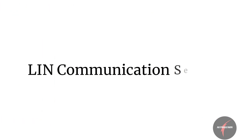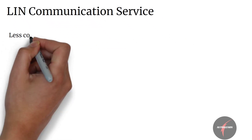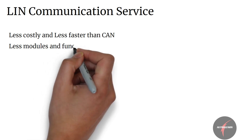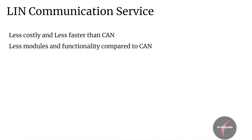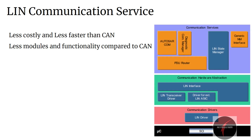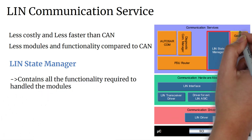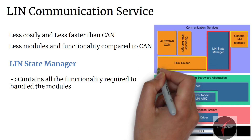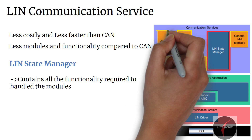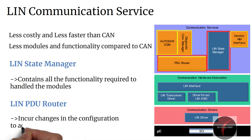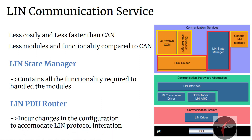Now let's look into the LIN communication service. In comparison to CAN, LIN communication is less costly and less fast, hence the number of modules and functionalities offered by LIN communication service is also less compared to CAN. The LIN state manager comprises all minimum functionalities required to handle modules such as generic NM interface, PDU router, diagnostic COM manager, and AUTOSAR COM. The PDU router will also incur changes in configuration to accommodate LIN protocol interaction compared to CAN.